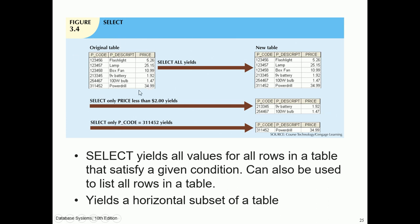For SELECT: given an original table, selecting all rows (SELECT *) returns the entire table. Selecting rows where price is less than a given value yields a filtered view. Selecting rows where product code equals a given value yields another view. SELECT yields all values for all rows in a table that satisfy a given condition; it can also list all rows and yields a horizontal subset of a table.